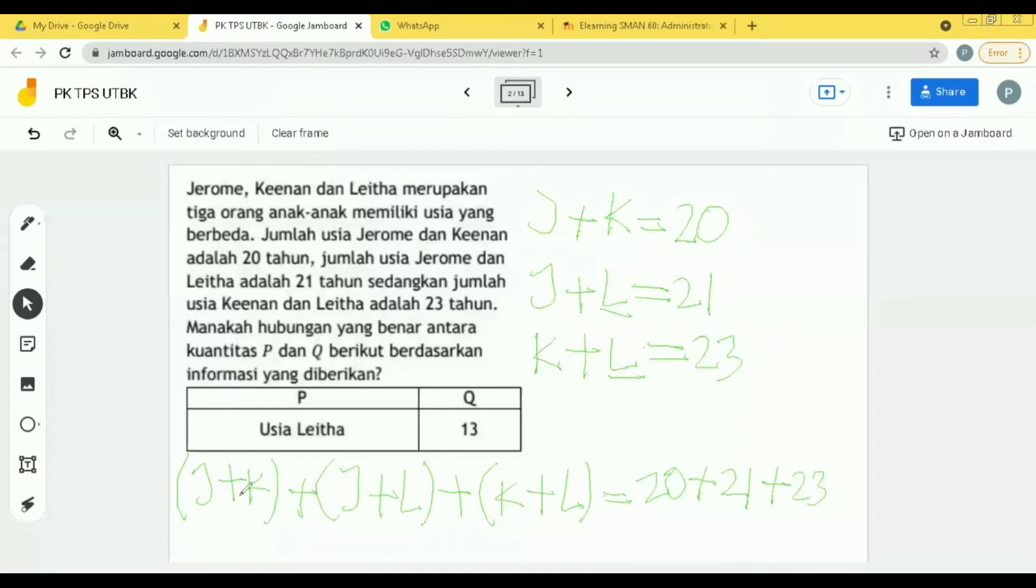Kamu lihat ya di sebelah kiri. Di sebelah kiri ini semuanya pemisahnya dengan tanda tambah ya. Berarti boleh nggak saya tulis dengan 2J? Karena di sini ada J, di sini ada J, jadi 2J. Boleh nggak? Boleh, Pak. Boleh.